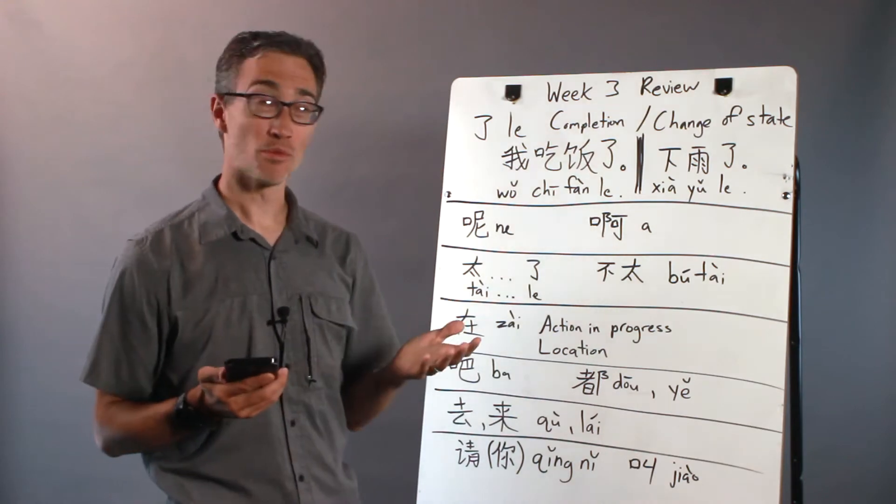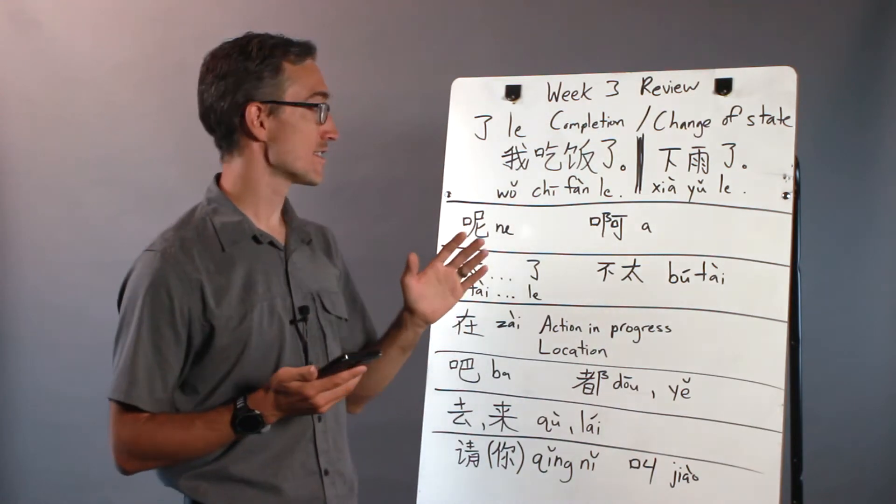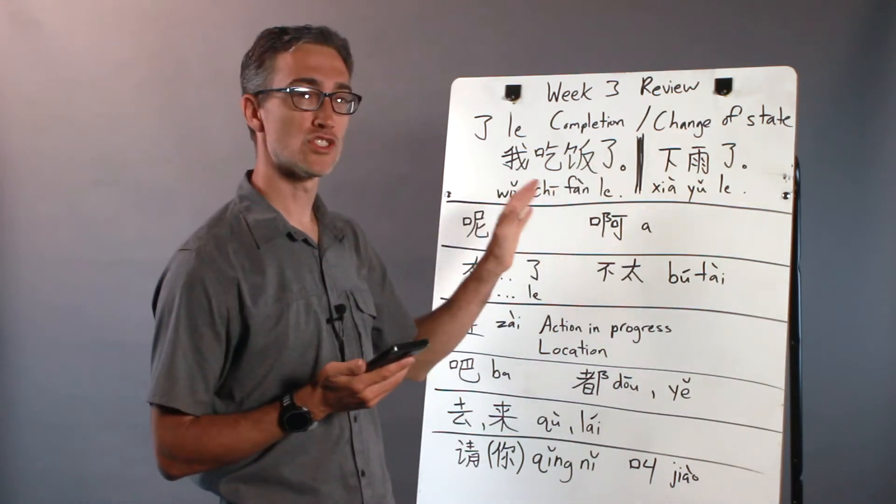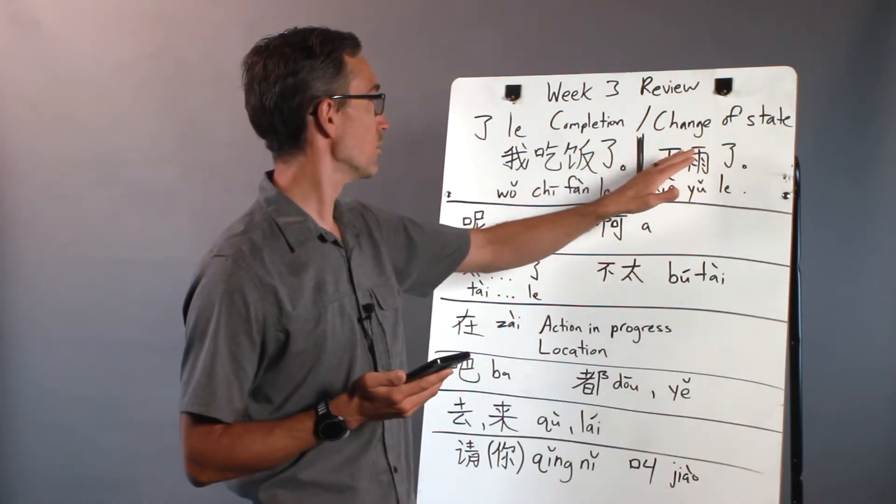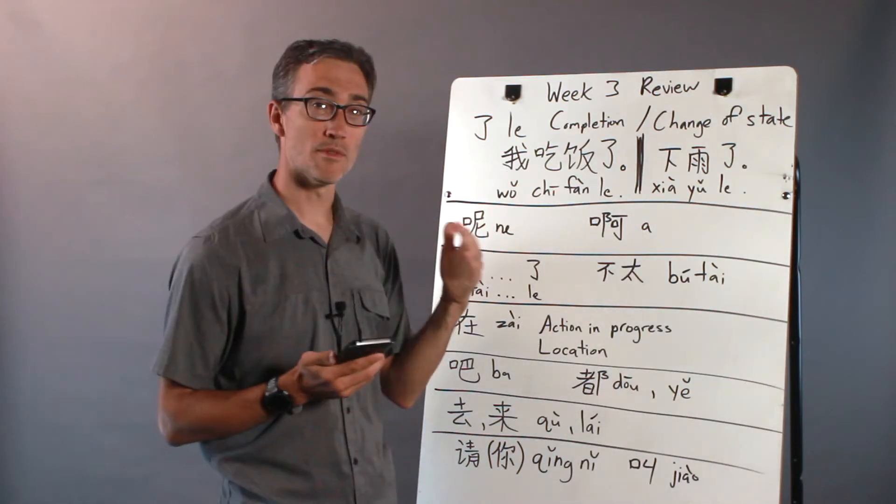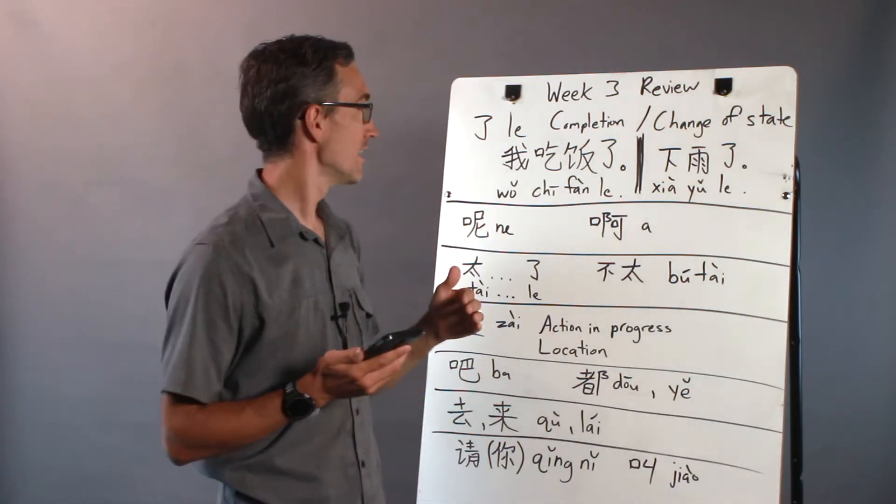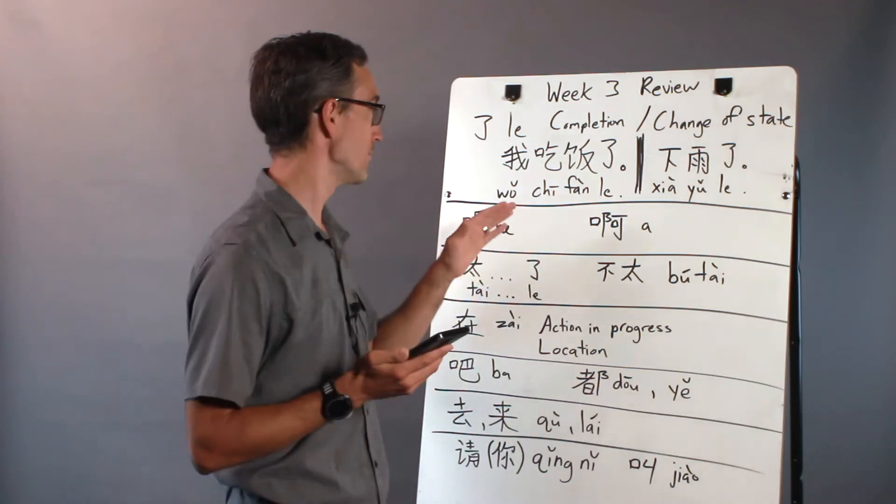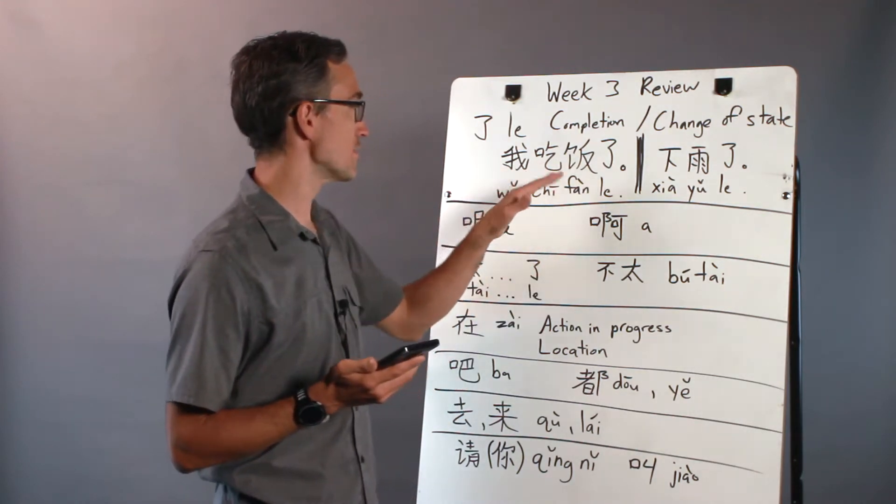La (了) is a super common particle and it has some different functions, but its most fundamental one is it indicates some sort of change. The two that we talked about were completion, that a verb has been completed. It doesn't mean past tense because it could be talking about the future or anytime, but it means that the verb has been completed.